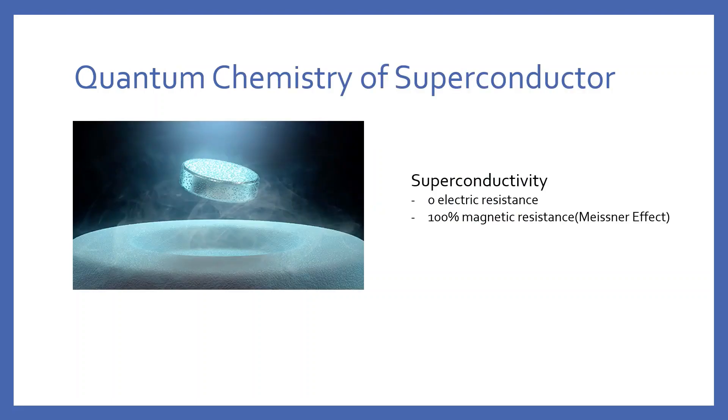First, let's begin with the superconductors. A superconductor is a material which has zero electric resistance and 100% magnetic resistance below the critical temperature. This is the basics of superconductors that we are familiar with. But what causes superconductivity?